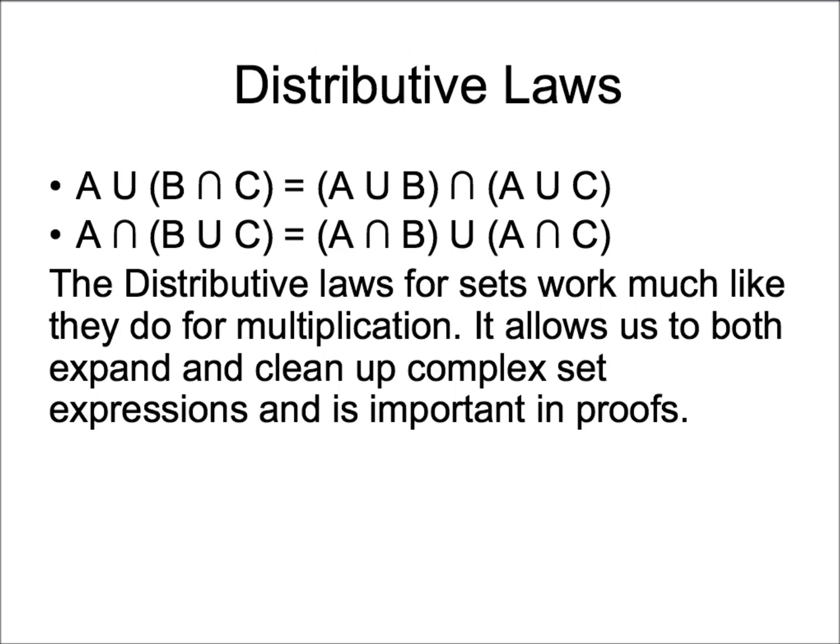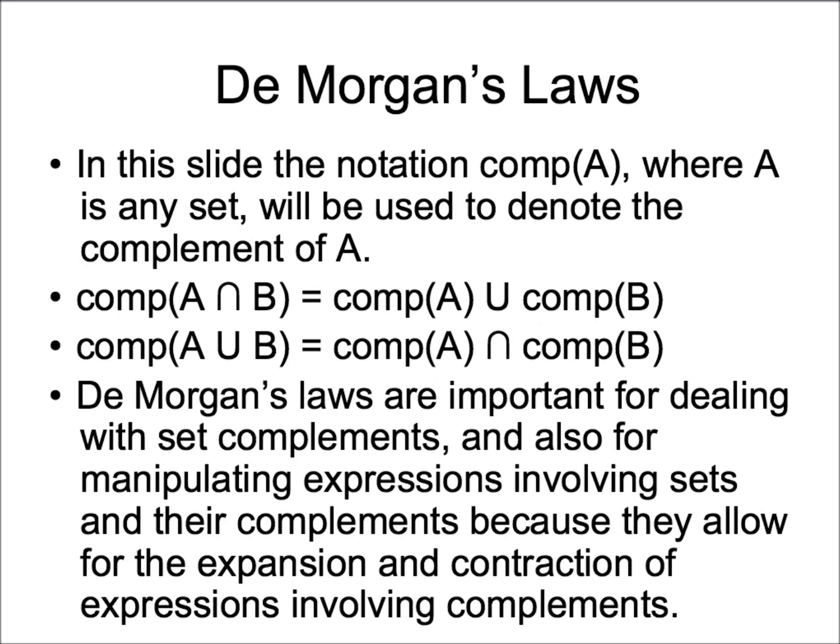The second law states that the intersection of set A and the union of set B and C is the same as the union of the intersection of A and B and the intersection of set A and C. Probably the least intuitive of the set identities is DeMorgan's laws.